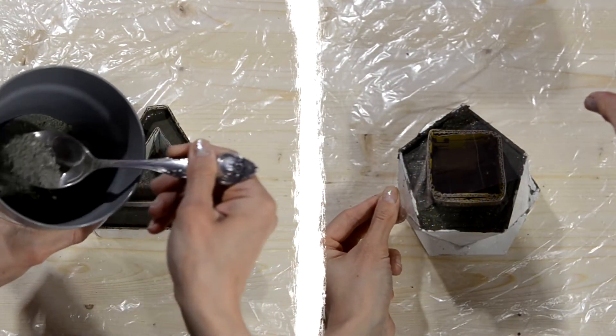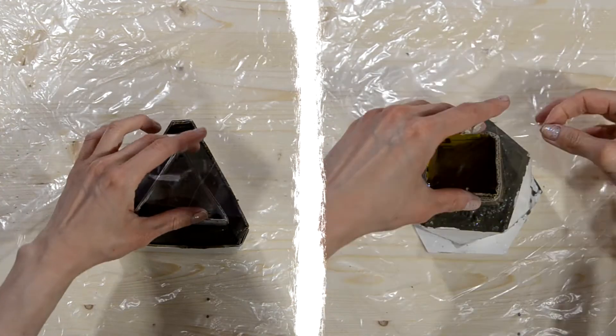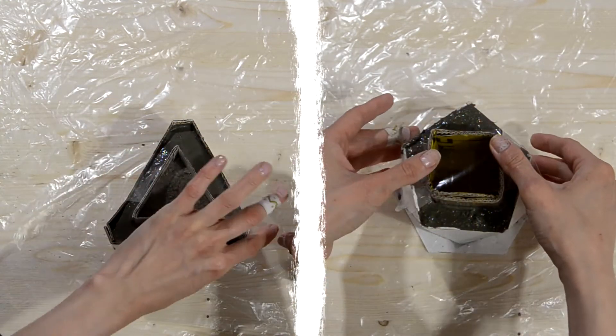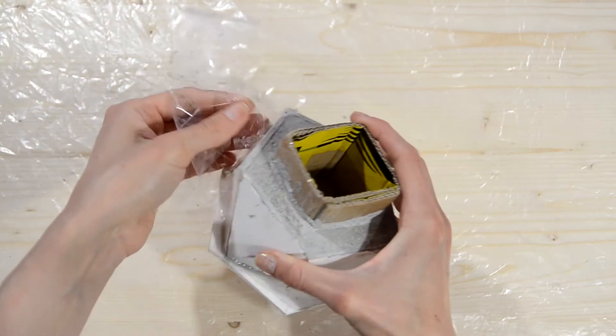After that, we fix the bushings in the right position with duct tape or by putting something like small stones in them. After at least 24 hours of drying, we can pull out the bushings and take out the shape.